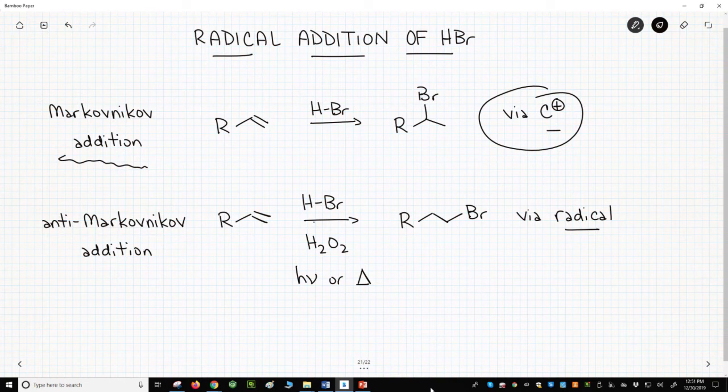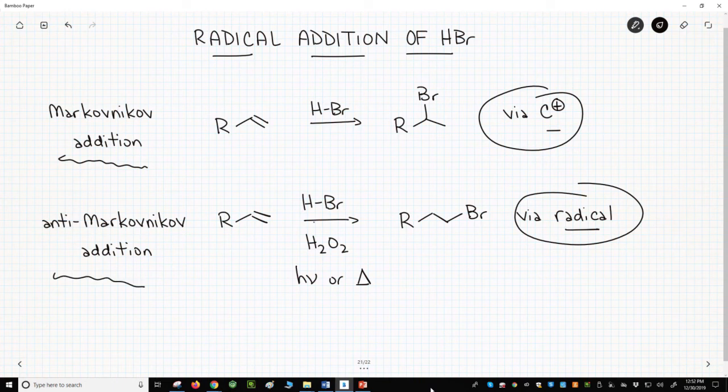The bottom reaction includes hydrogen peroxide H2O2 and either heat or light. These are a clue that the reaction involves radicals. The lower reaction gives the anti-Markovnikov product.